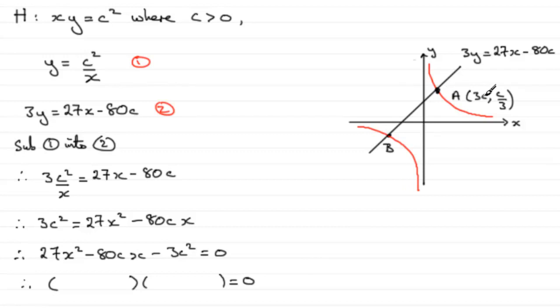So that suggests that X minus 3C has got to be one of these factors. So I'll put X minus 3C in here. So that means we've got another 27X has got to go here.